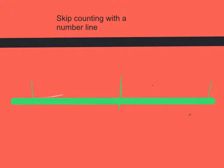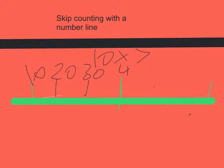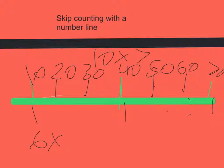Right now I'm going to do skip counting with the number line. My example question is going to be ten times seven. First, I'm going to go ten, twenty, thirty, forty, fifty, sixty, seventy. So our answer for that is seventy.